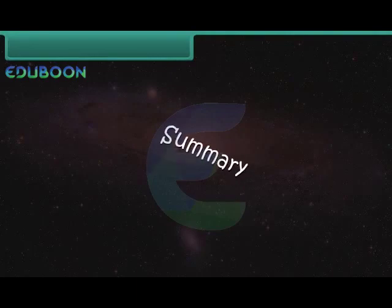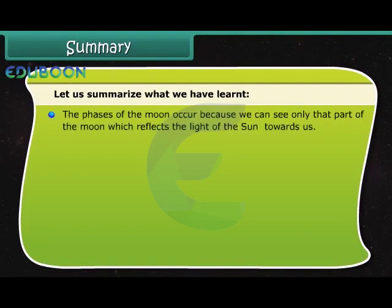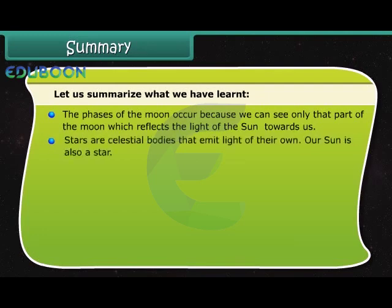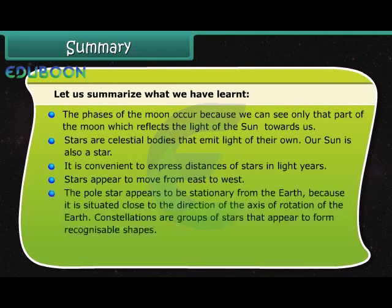Summary. Let us summarize what we have learned. The phases of the moon occur because we can see only that part of the moon which reflects the light of the sun towards us. Stars are celestial body that emit light of their own. Our sun is also a star. It is convenient to express distances of stars in light years. Stars appear to move from east to west. The pole star appears to be stationary from the earth because it is situated close to the direction of the axis of rotation of the earth. Constellations are group of stars that appear to form recognizable shapes.